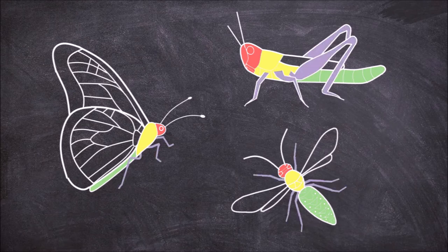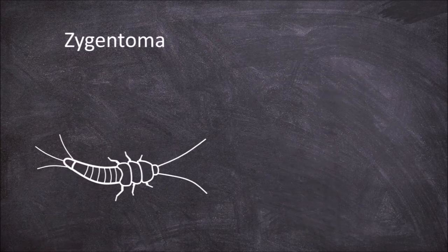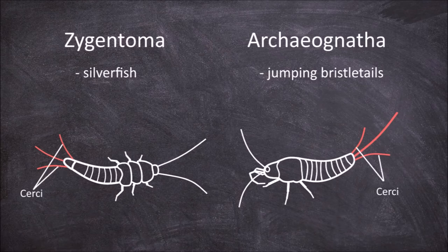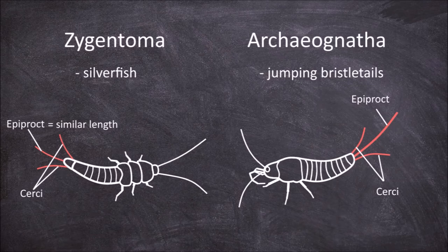Each order of insect differs in one way or another and has characteristic features that aid in differentiating each group. The first two orders are the Zygentoma, which are the silverfish, and the Archaeognatha, which are the jumping bristletails. Members of both orders possess three long caudal filaments. The lateral filaments are called cerci and the medial one is called the epiproct. In the Zygentoma the cerci are nearly the same length as the epiproct, whereas in the Archaeognatha the cerci are much shorter than the epiproct.